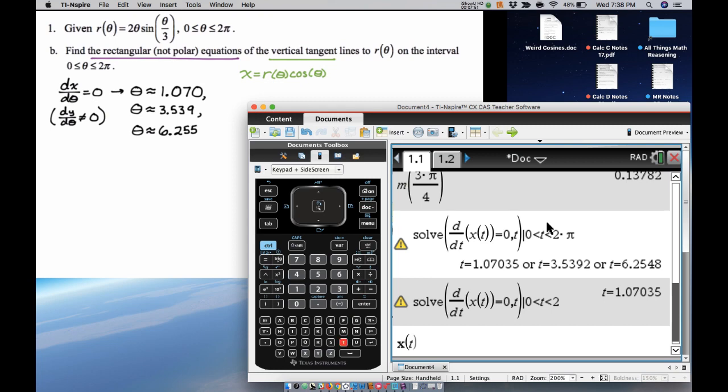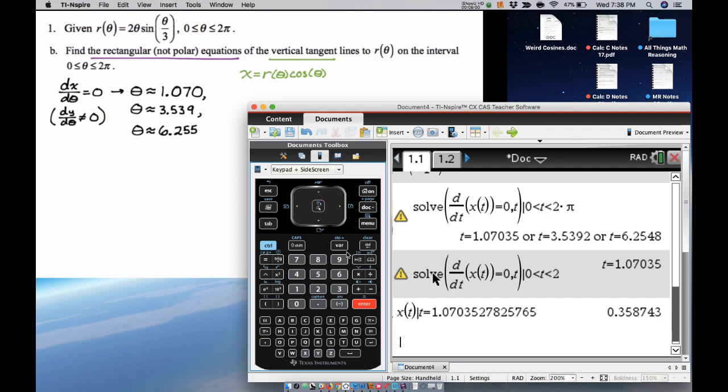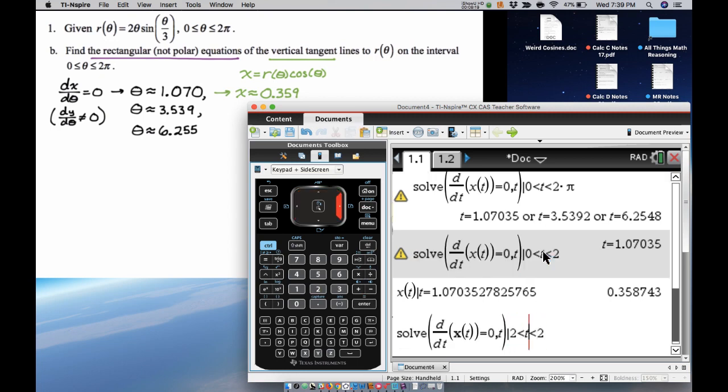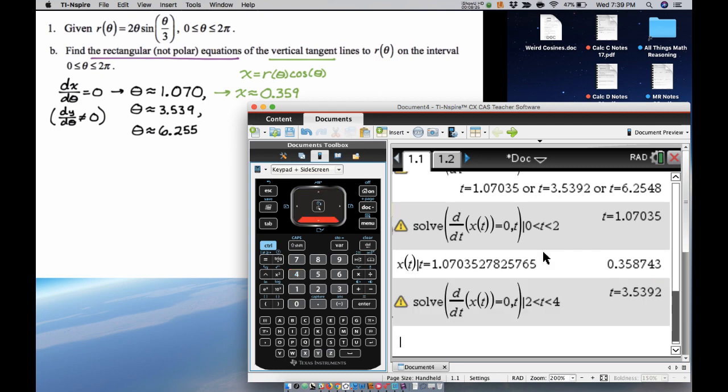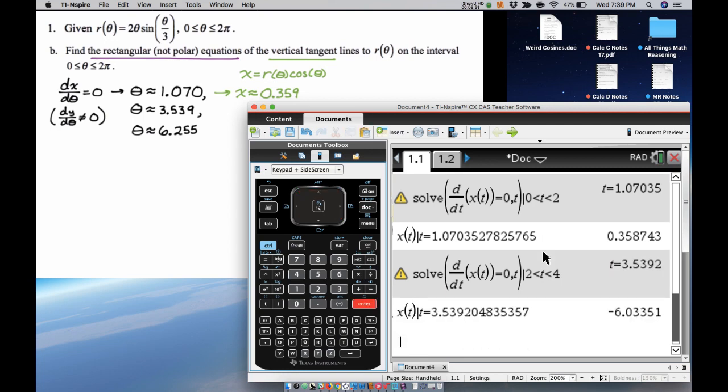And then what I can do is x(t), such that the answer, just paste this down, and I get that, so I have one value. So this corresponds to x is about 0.359. And then I can keep doing that. The next one is like 3.539, so that's between 2 and 4. So I'm going to solve this between 2 and 4, and then I can just do x(t), such that the answer again. So I get negative 6.034.